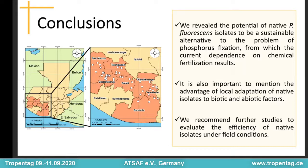As conclusions, we revealed the potential of native Pseudomonas fluorescens isolates to be a sustainable alternative to the problem of phosphorus fixation, from which the current dependence on chemical fertilization results. We hope to bring an environmentally friendly option to farmers and reduce the risk of environmental pollution. It is also important to mention the advantage of local adaptation of native isolates to biotic and abiotic factors like the relation with other soil microorganisms, soil humidity, temperature, and others. We recommend further studies to evaluate the efficiency of native isolates under field conditions. Thank you very much for your attention, and I look forward to your questions.